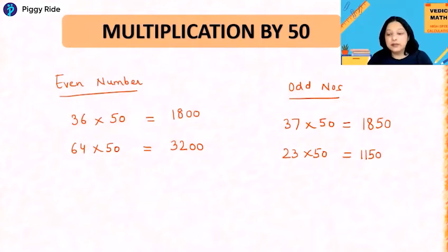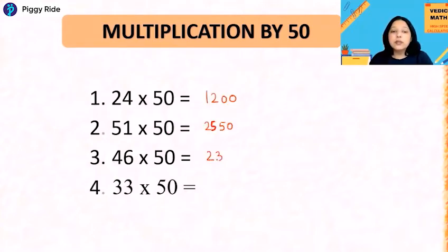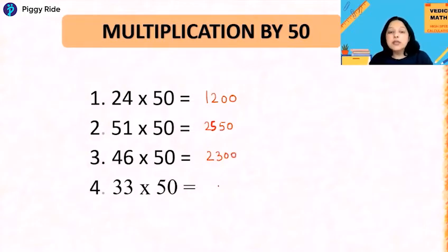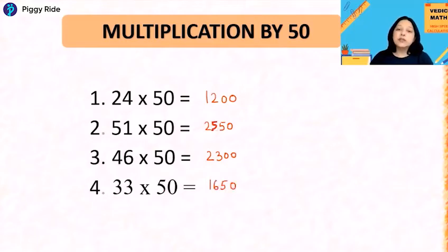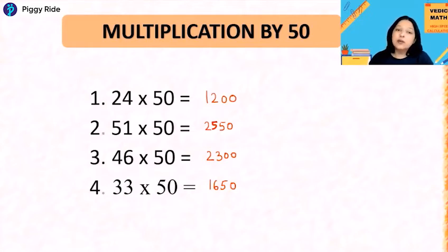Let's do some quick calculations based on multiplication by 50: 46 × 50 — half is 23, two zeros because it's even — 2300. 33 × 50 — 33 is odd, half is 16.5, so 165 and then 1 zero at the end — 1650. If you have the concept in your mind, you can do the multiplication without actual multiplication.